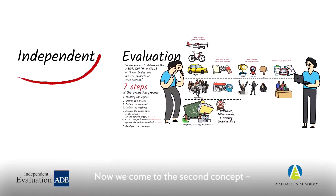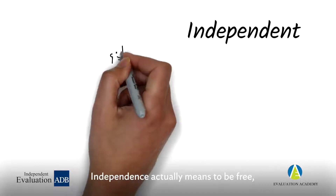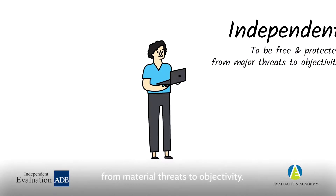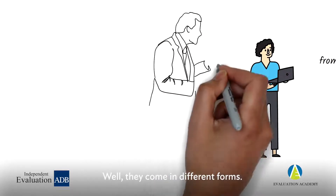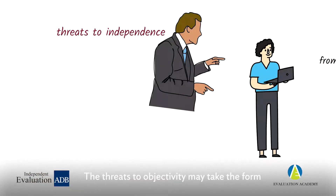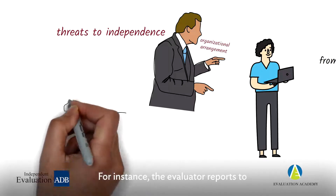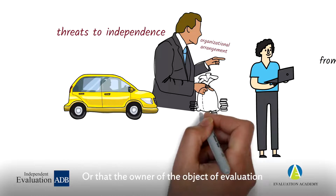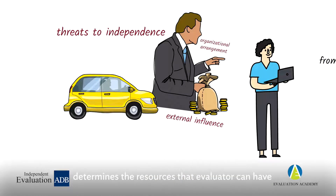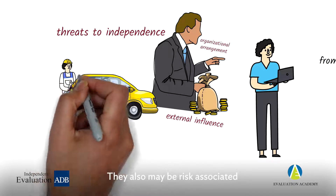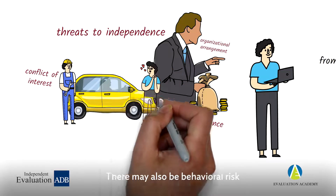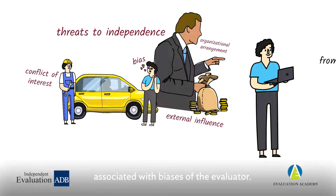Now we come to the second concept of independence. Independence actually means to be free, to be protected from material threats to objectivity. What are risks to objectivity? Well, they come in different forms. The threats to objectivity may take the form of organizational arrangements — for instance, the evaluator reports to the owner of the object of evaluation, or the owner determines the resources the evaluator can have. They may also be risks associated with conflict of interest, where the evaluator may have been involved with producing the product.